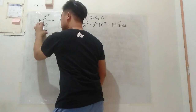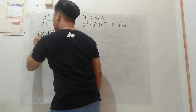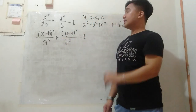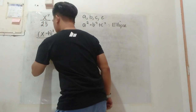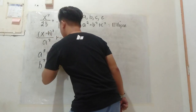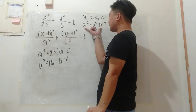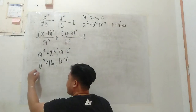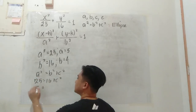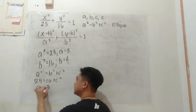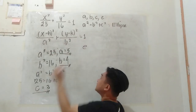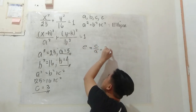Following the standard form (x − h)²/A² + (y − k)²/B² = 1, we can clearly see that A² = 25, so A = 5. B² = 16, so B = 4. Using A² = B² + C²: 25 = 16 + C², so C² = 9 and C = 3. Eccentricity E = C/A = 3/5 = 0.6.